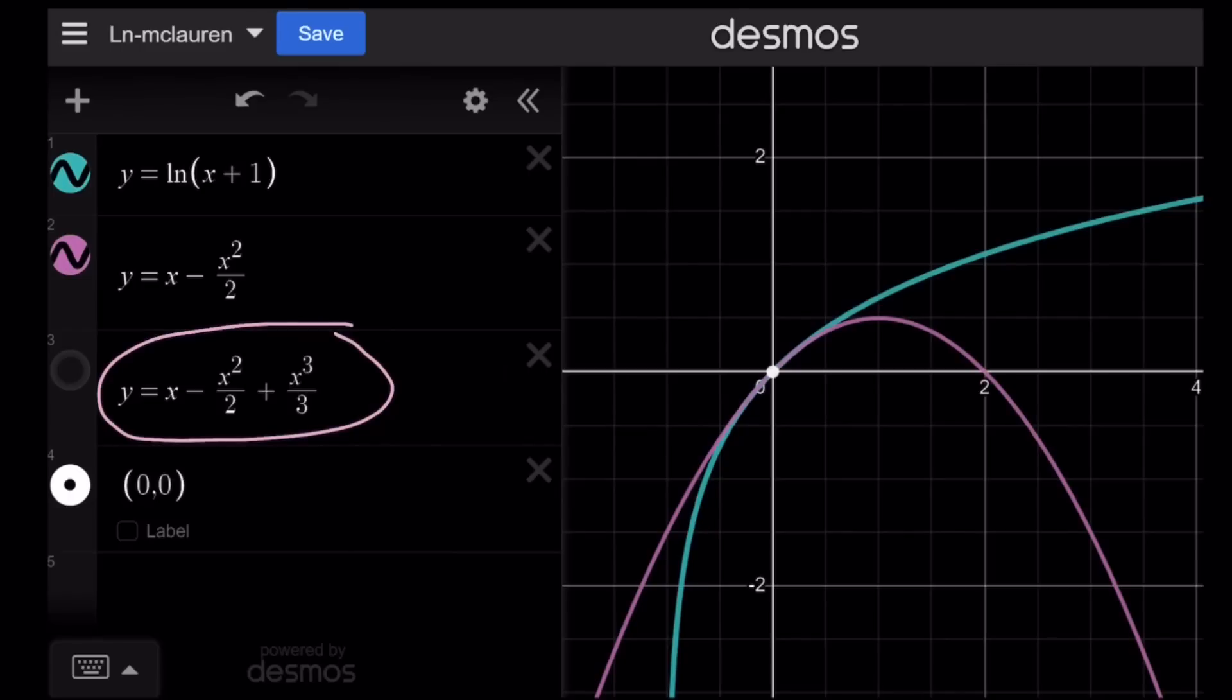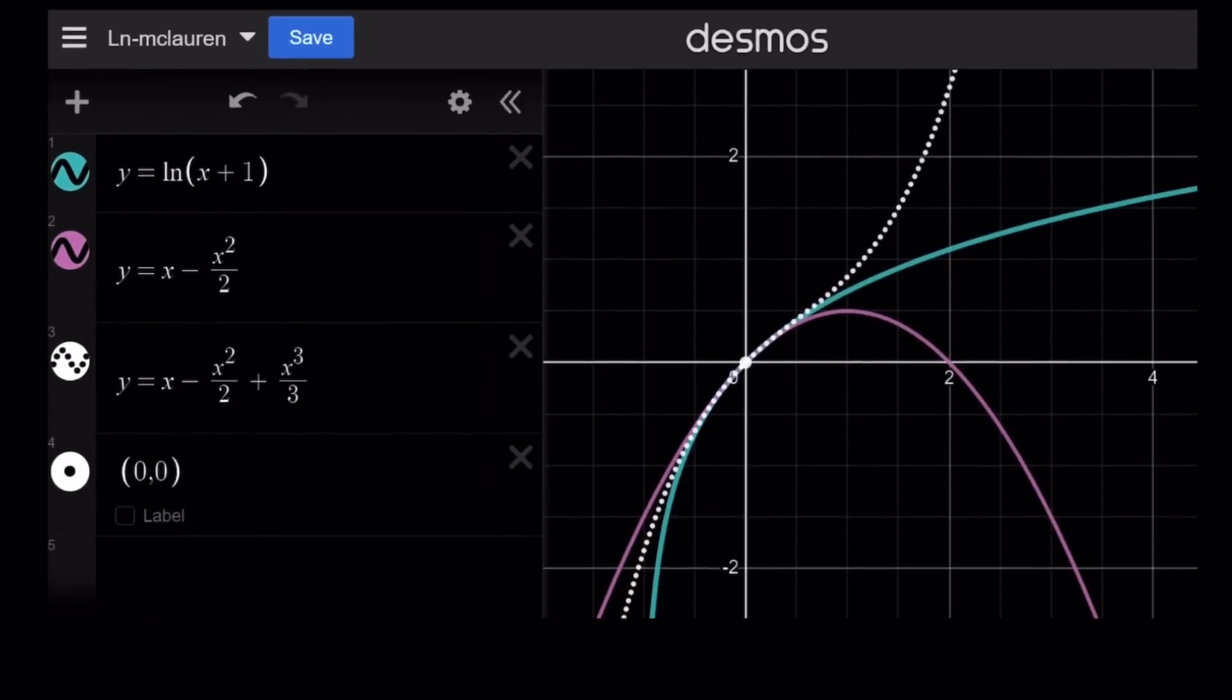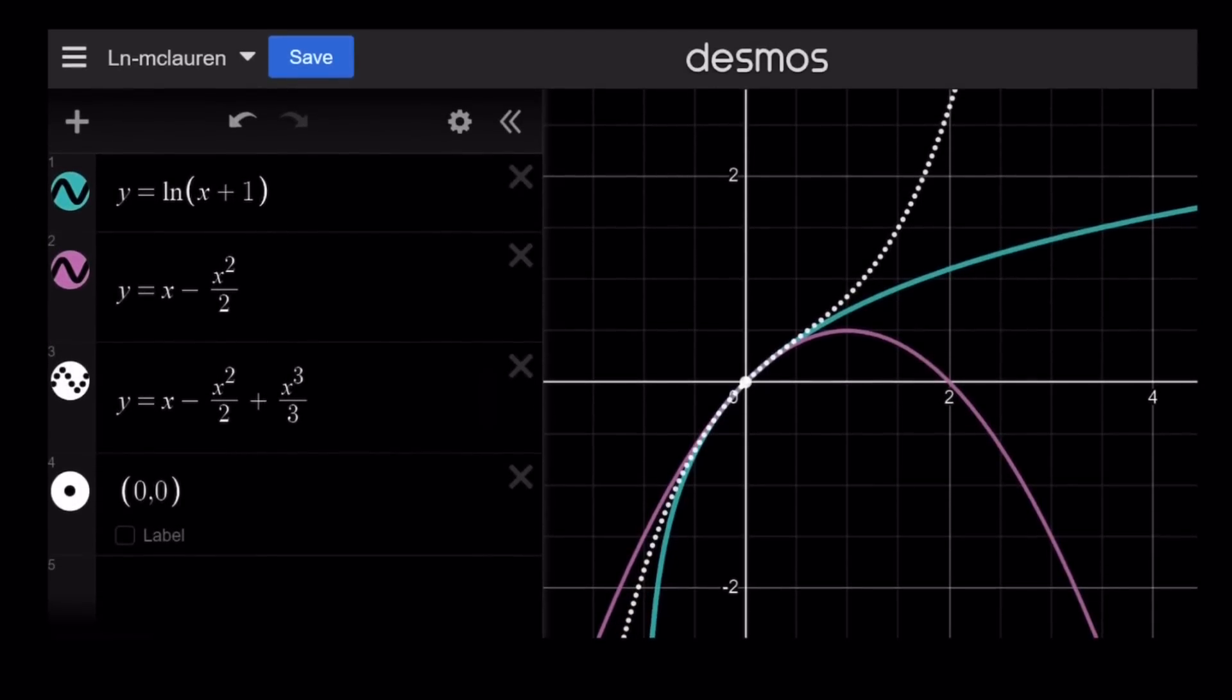That is when you expand McLaurin a little bit more. And obviously you can make up more equations like that. And (0,0) is where they have a common tangent, and you can see that clearly here. These two functions have a common tangent. I just didn't graph it, but you can easily graph it. It's going to be y equals x. And the dotted line shows you if you continue with the McLaurin series, you're going to get a more accurate picture.